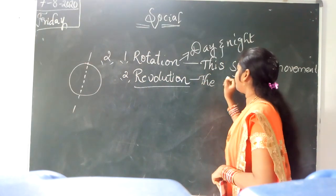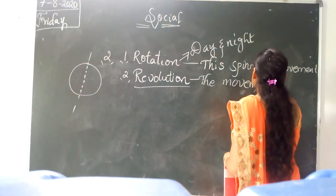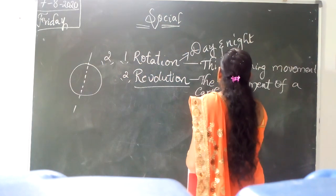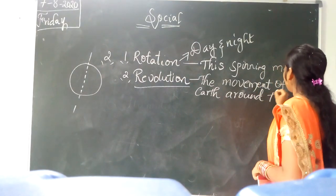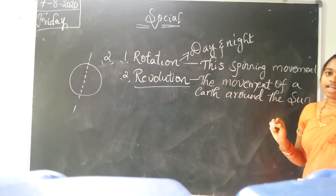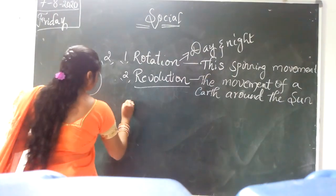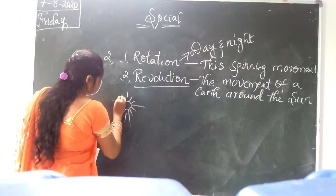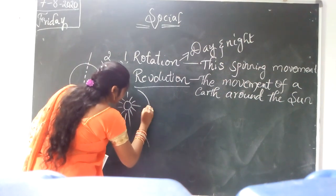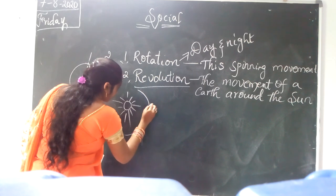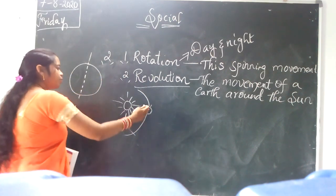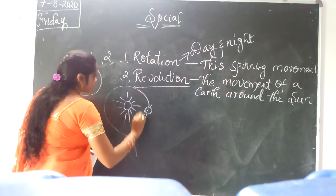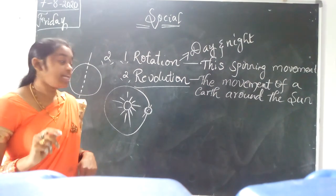The movement of the Earth around the sun — here I am showing you. This is the sun, and this is the Earth. The Earth tilts and moves around the sun. The Earth revolves around the sun. This movement we call revolution. Revolution causes seasonal changes.